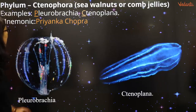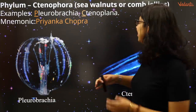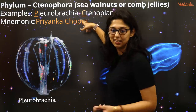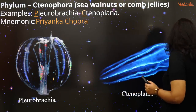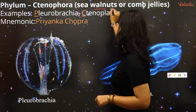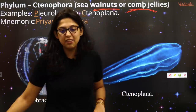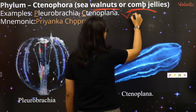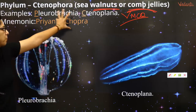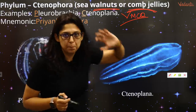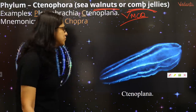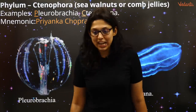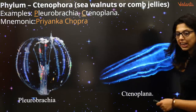Let's move on to the next one — Priyanka Chopra! This is the easiest one. Phylum Ctenophora: Priyanka = Pleurobrachia, Chopra = Ctenophora. PC — easy! It'll be in the PDF. Ctenophora are sea walnuts or comb jellies — very very important from the exam. Two direct MCQs. They also exhibit the property of bioluminescence.